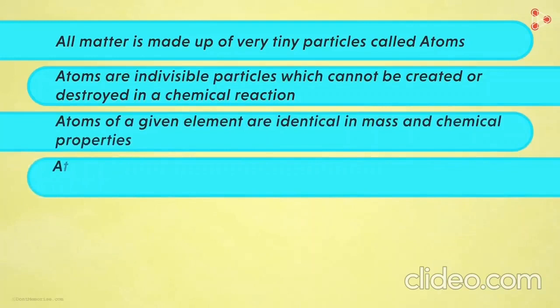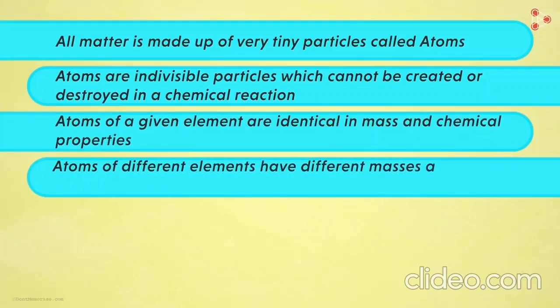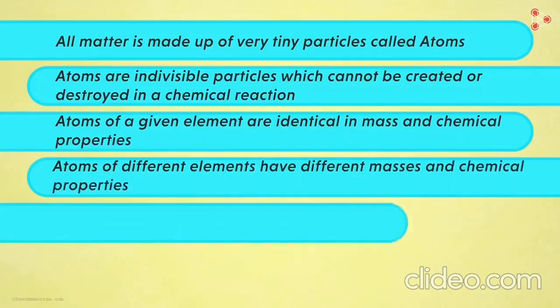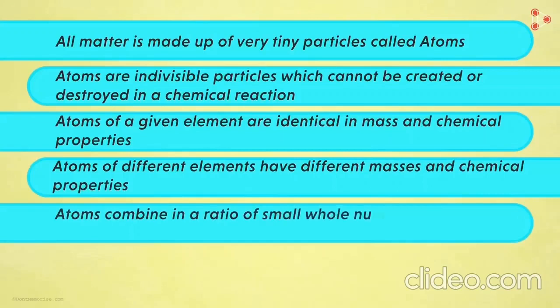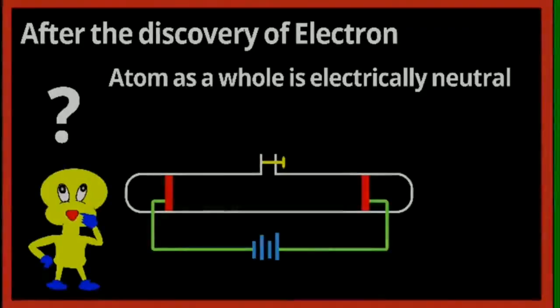For example, if I take the atom of sodium and compare this atom with that of magnesium, both will be different from one another with respect to their masses and chemical properties. The last point says atoms combine in a ratio of small whole numbers to form compounds. For example, if I take up the case of sodium chloride which is a compound, it is made up of one atom of sodium and one atom of chlorine.